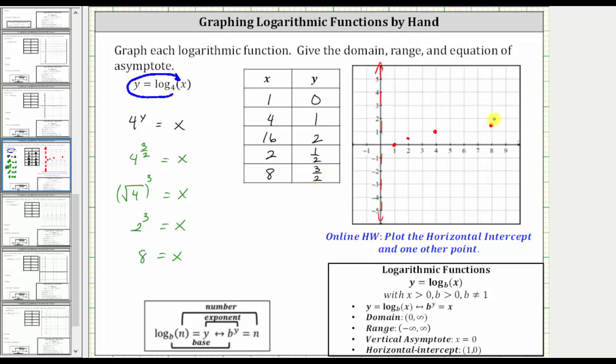So we know the graph passes through these four points and approaches the vertical asymptote, and therefore the graph looks something like this.